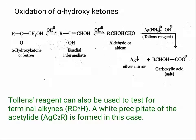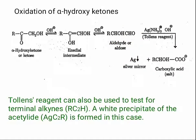This is the oxidation process for alpha-hydroxy ketones. You take the alpha-hydroxy ketone in basic medium, forming an enol intermediate, which converts into an aldehyde or aldose. Then the silver diamine complex reacts with this aldehyde, a carboxylic acid salt is formed, and you get a silver mirror — confirming the presence of an aldehyde or alpha-hydroxy ketone group.